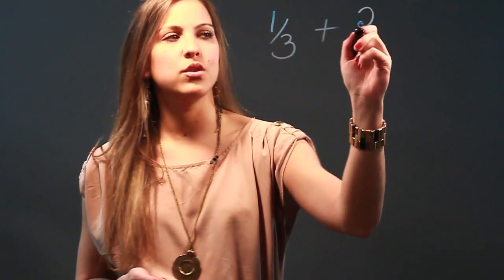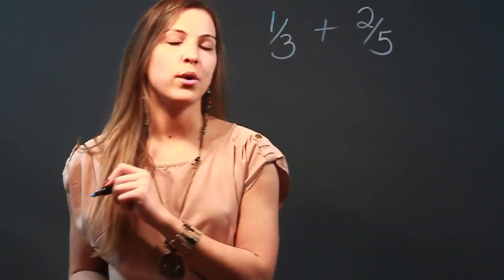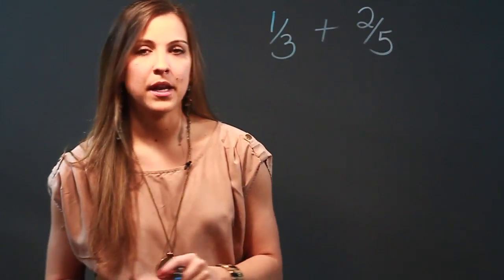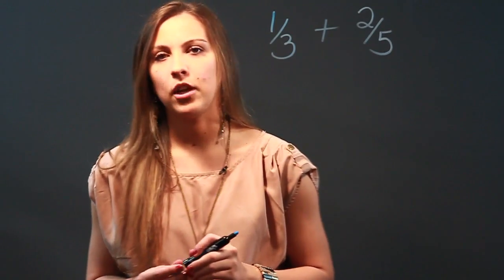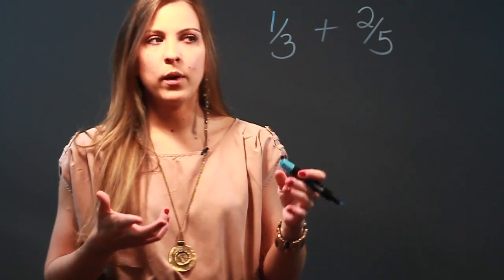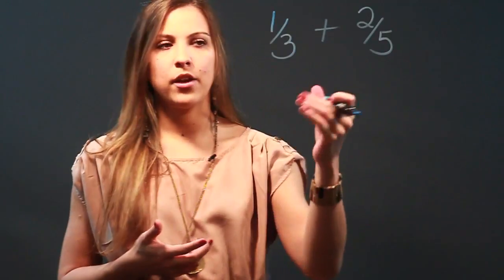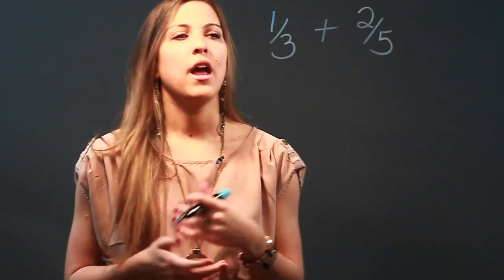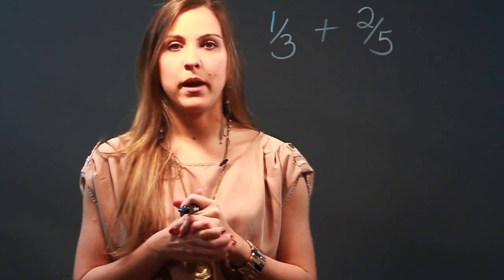So if we've got the fraction one-third and we want to add it to two-fifths, we don't have the same denominators. We know that we need the same denominator before we can add them. One way is to look for the least common denominator, but if you want an easy way out, we're just going to do it by cross multiplying.